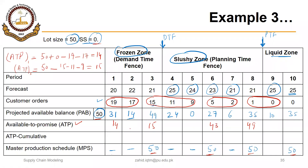For cumulative ATP: period 1 equals its discrete ATP of 14. For period 3, it is 14 plus 15 equals 29. For period 6, it is 29 plus 43 equals 72. For period 8, it is 72 plus 49 equals 121.